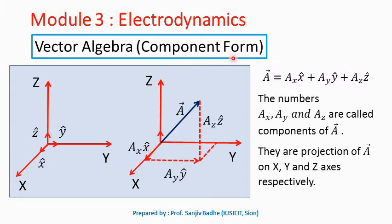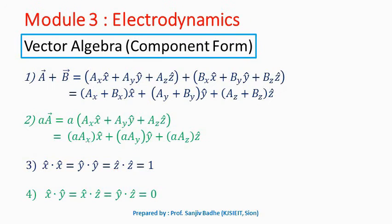So we write a vector in component form as a bar equal to ax x cap plus ay y cap plus az z cap, where x cap, y cap, and z cap are unit vectors along the x, y, and z axes respectively, and ax, ay, az are the components of a bar. Now let us discuss vector algebra in component form — how two vectors are added, how a scalar is multiplied with a vector, how the dot product and the cross product are written in component form.